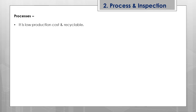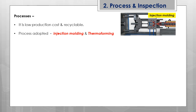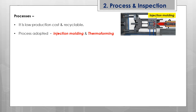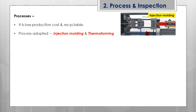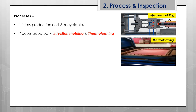ABS is low in production cost and recyclable. One major process is injection molding, shown in the clip on the right side. Granules are fed into a screw barrel, heated in stages until they reach a liquid state, and then injected under high pressure into a mold. Based on the shape of the mold, the material solidifies during a cooling time, and the final product is then removed.